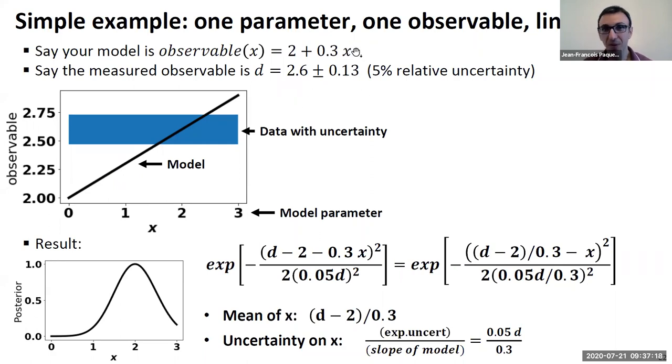Simply from the fact that your model doesn't depend a lot on the parameter. So the larger the uncertainty, the larger the uncertainty on x. And again, if you just compute your posterior, you obtain this result, which I will not walk you through. I think it's relatively trivial. If you have questions, just ask. But again, you end up with...